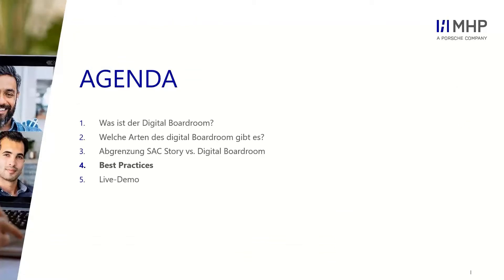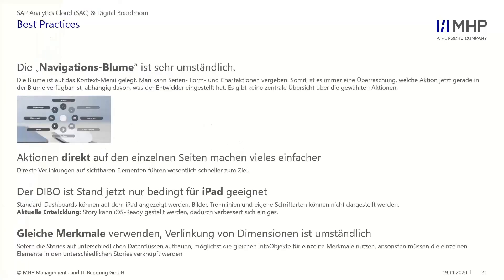Was für Erfahrungen haben wir in Kundenprojekten mit dem Digital Boardroom gemacht? Eine Kernkompetenz vom Digital Boardroom ist die sogenannte Blume – das zentrale Steuerelement. Die Navigation mit der Blume ist oft sehr umständlich, weil man sehr viele Klicks machen muss, bis man das Ziel erfüllt hat. Man kann verschiedene Funktionen auf diese Blume drauflegen, die seitenweise änderbar sind. Das heißt, es ist immer eine kleine Überraschung, welche Aktion auf welcher Seite möglich ist – für die Benutzerführung nicht optimal. Es ist eher etwas für Experten, nicht für den Vorstandsreport, wo man ein einheitliches Reporting haben möchte.